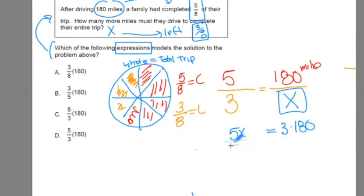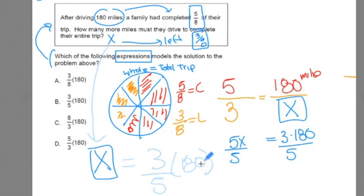Just trying to solve for x, divide by 5 on both sides. And what do we get? We get x, the number of miles that are left, is equal to 3 over 5 times 180. We've just come up with the expression that represents the number of miles left. We've come up with the expression that represents the solution to this problem. The answer here is B.